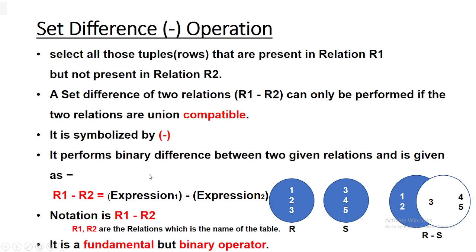Set difference is a fundamental but binary operator — it takes two relations and gives you the output. It selects all those tuples which are present in relation one but not present in relation two. Suppose there are two relations R and S; the set difference operation selects all tuples present in the first relation R but not in the second relation S.